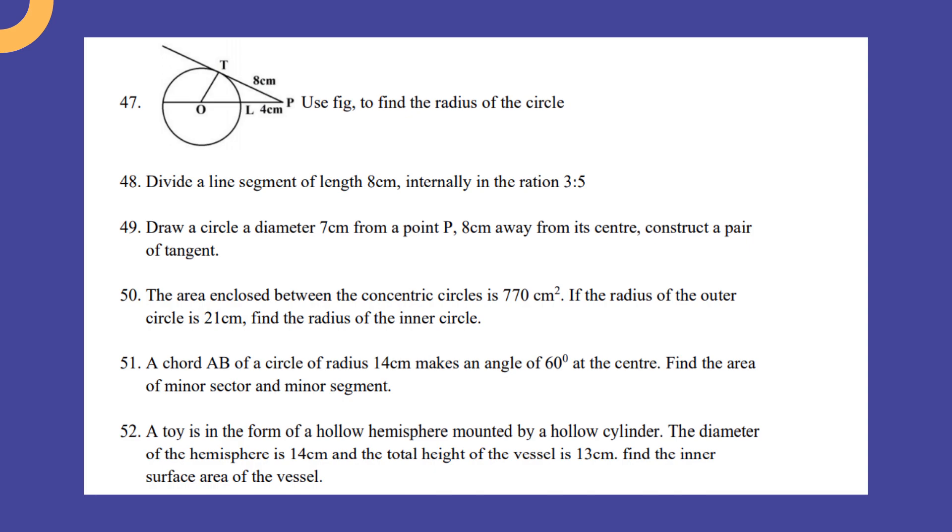The area enclosed between the concentric circles is 770 square centimeter. If the radius of the outer circle is 21 centimeter, find the radius of the inner circle.